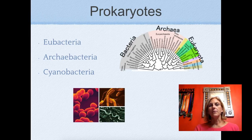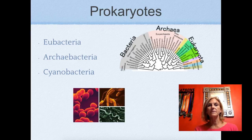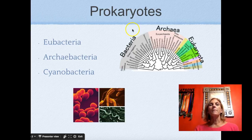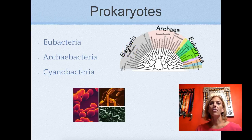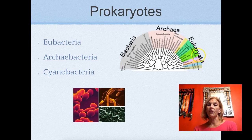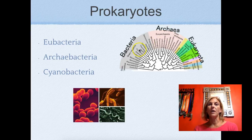First of all, this gives us an opportunity to talk about taxonomy — how we classify organisms. All organisms fit into one of three domains: we have the bacteria or eubacteria, the archaea or archaebacteria, and the eukaryota or eukarya. The eukaryotes are the organisms with nuclei, and the two bacteria domains are those that don't have nuclei.